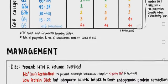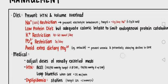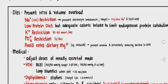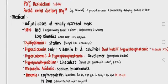The management of CKD includes dietary and medical management. Dietary management to prevent hypertension and volume overload includes sodium restriction, low protein diet, potassium restriction, phosphorus restriction, and avoiding excessive magnesium in the diet. Medical management includes medicines for hypertension such as ACE inhibitors, loop diuretics for hypertension, and statins for dyslipidemia.